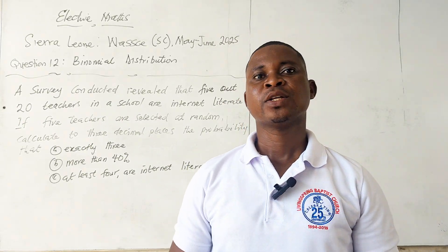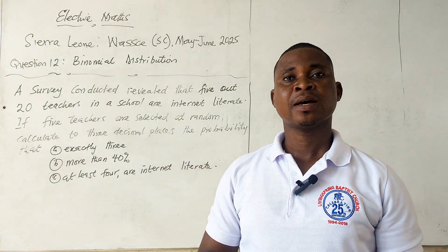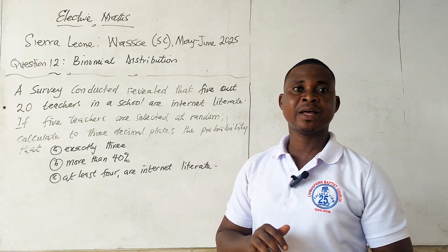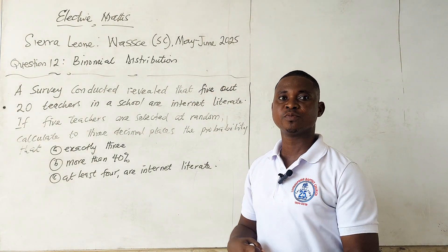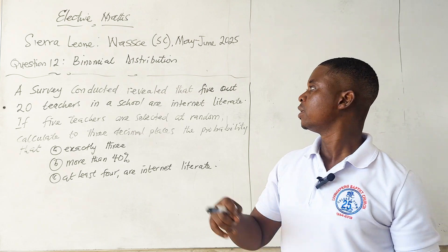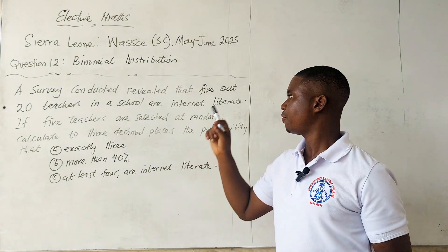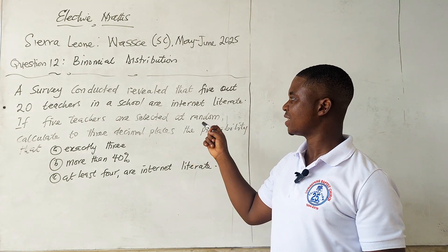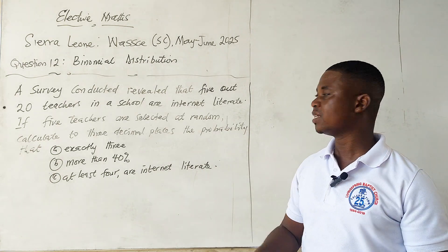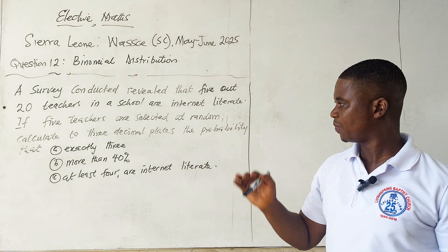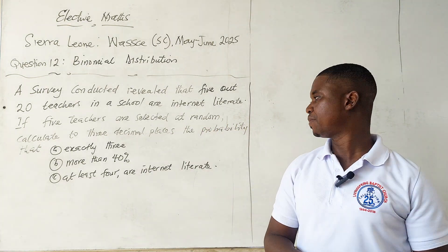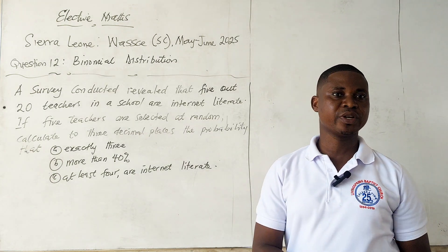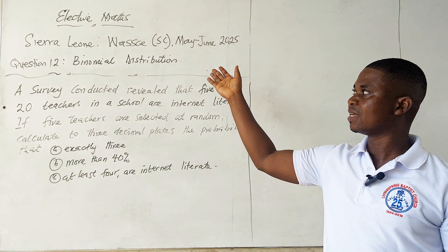Hi, welcome to today's lesson. Today we are going to look at Elective Maths 2025, question number 12. The question is on binomial distribution. The question states: a survey conducted revealed that five out of 20 teachers in a school are internet literates. If five teachers are selected at random, calculate to three decimal places the probability that: (a) exactly three, (b) more than 40%, (c) at least four are internet literates.